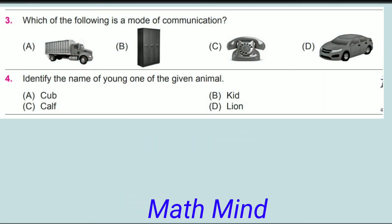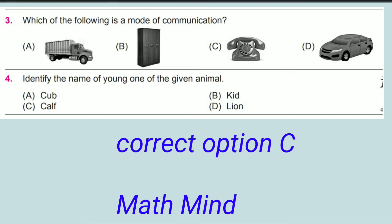Question number 3: Which of the following is a mode of communication? Option C, Telephone, is for communication. Option A, Truck, is used to transport goods. Option D, Car, is used to travel. Option B is used for storage.